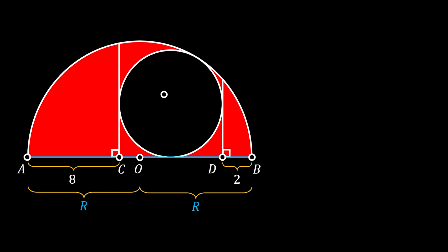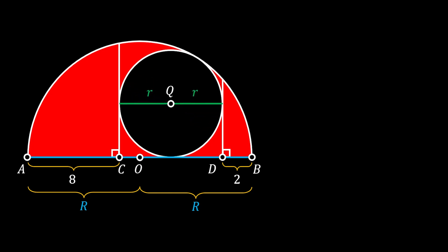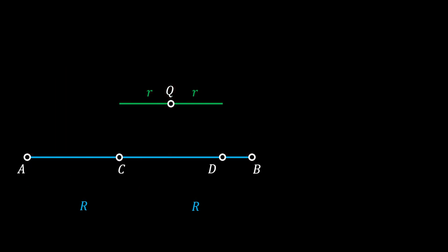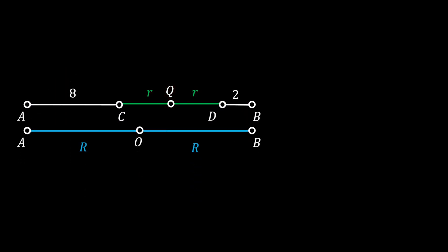Now if we mark the center of our smaller circle as Q and draw its radius, labeled as small r, we can pull the radius on the other side — that will also have the value of r. We will then rotate this diameter to be a horizontal line, and now we can start forming our first equation.